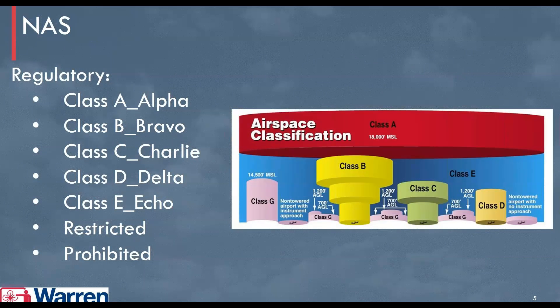The regulatory airspace is largely regulated by government agencies, normally the FAA, although there may be other agencies that restrict us. For instance, you will find restricted airspace around places like the White House, Camp David, or other highly sensitive government areas that will be restricted or prohibited.